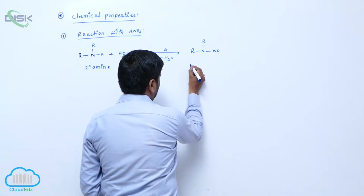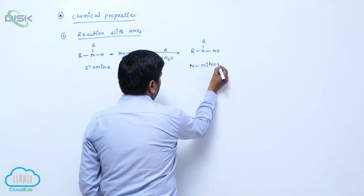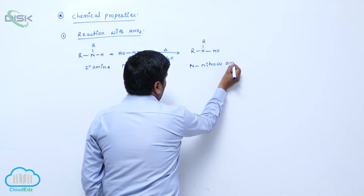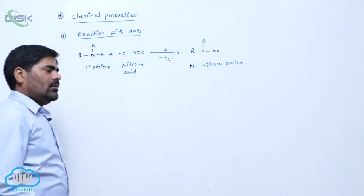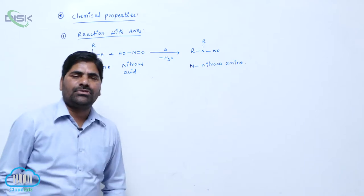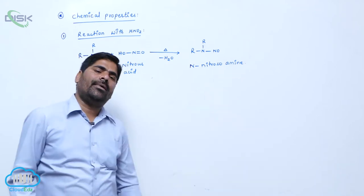N-nitrosoamide amine, N-nitroso. So the primary amine converts into alcohol, secondary amine converts into N-nitrosoamide.